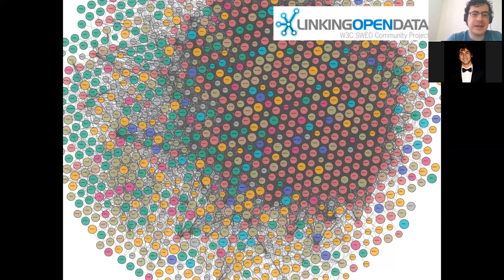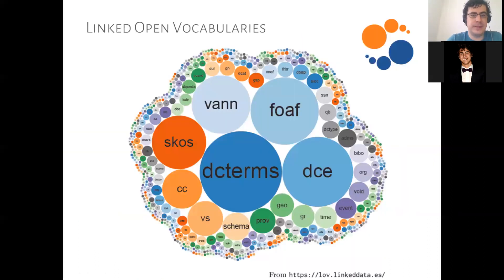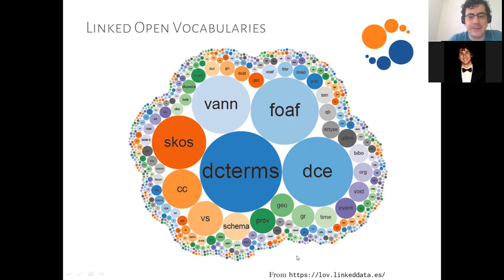There are lots of datasets published available on the web as linked open data, and this has also been an important part of the success story of the semantic web. We also have lots of vocabularies published. If we want to describe particular types of entities — maybe geographic data, licensing data, or sensor networks — we can find vocabularies for many different types of data we might want to describe. The size of the circle here indicates how many different websites are using each vocabulary.